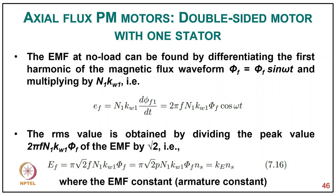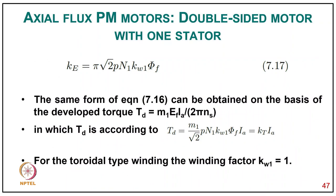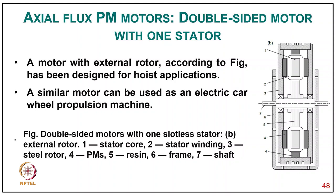The induced EMF constant is Ke = π√2·p·N1·kw1·φf. The same form can be obtained from developed torque Td = m1·Ef·Ia / (2π·Ns), giving Td = (m1/√2)·p·N1·kw1·φf·Ia = Kt·Ia. For the toroidal-type winding the winding factor kw = 1. A motor with an external rotor has been designed for a horse application; a similar motor can be used as an electric car wheel motor.